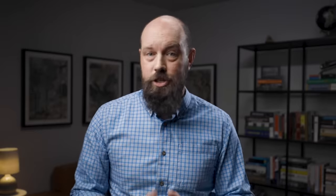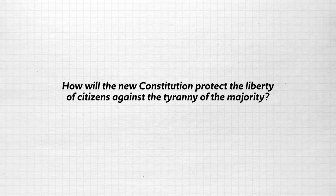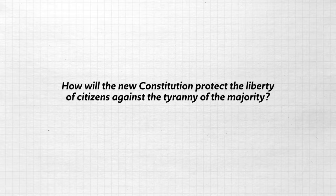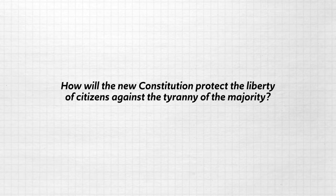Federalist 10 is James Madison's attempt to answer the following question: How will the new constitution protect the liberty of citizens against the tyranny of the majority? The framers of the constitution were emphatically not fans of pure democracy, because in a pure democracy the majority will always win out over the minority and thus there is no protection from minority views.